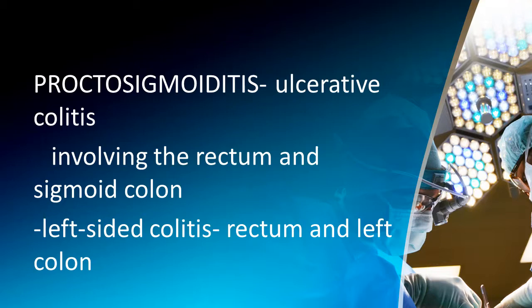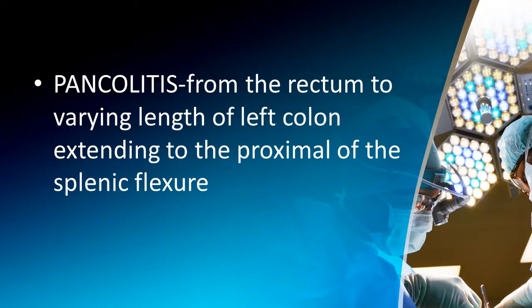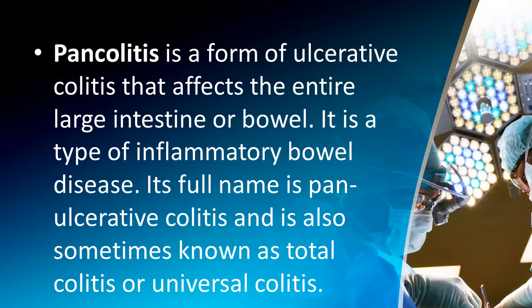Classifying by extent: proctitis involves the rectum only; proctosigmoiditis involves the rectum and sigmoid colon; left-sided colitis involves the rectum and left colon; pancolitis extends from the rectum to the proximal splenic flexure, affecting the entire large intestine. Pancolitis is also known as total colitis or universal colitis.